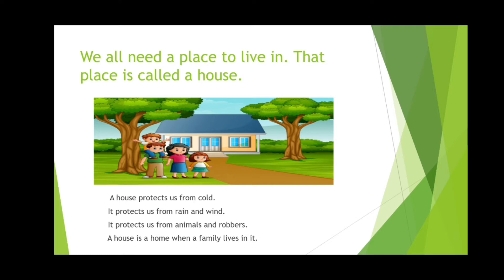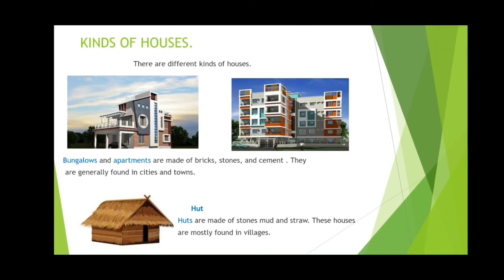Now we'll see different kinds of houses. There are different kinds of houses like bungalows, apartments, huts, and igloos. First, let us see about bungalows and apartments. These houses are made of bricks, stones, and cement. They are generally found in cities and towns.